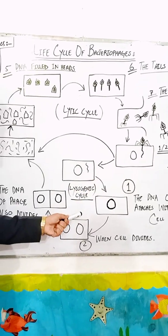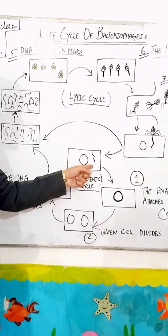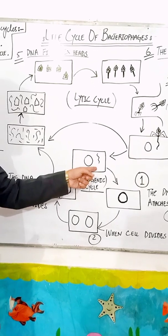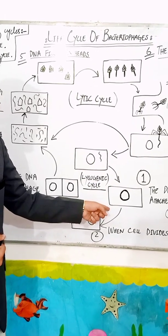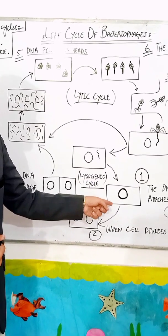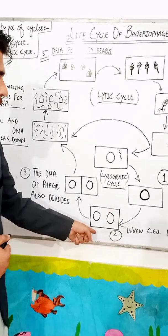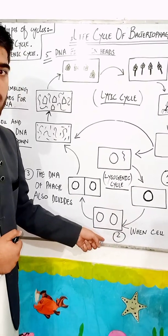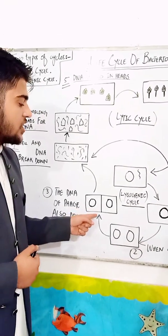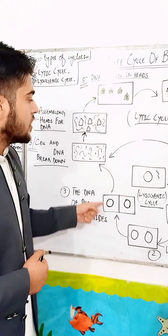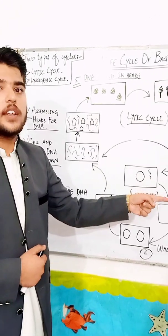Now, the lysogenic cycle. It starts when DNA is inside the cell. The first step is the DNA of the phage attaches with the cell. In the second step, when the cell divides, the DNA of the phage also divides with the cell. And then the whole process starts again.